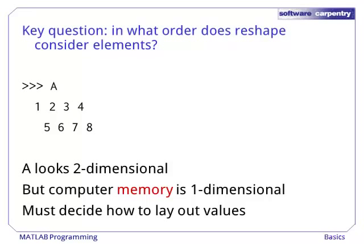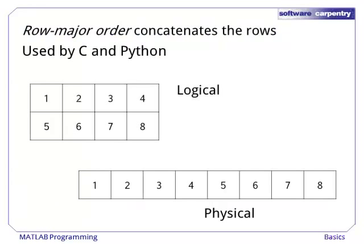To think about two-dimensional matrices, we need to decide on a convention on how to store the matrix in memory. One possibility is row major order, which concatenates the rows. This is the convention used in the C programming language and in Python, since Python is written in C.